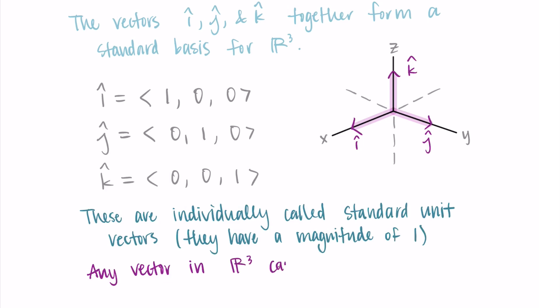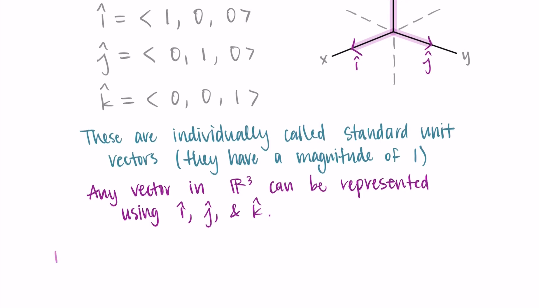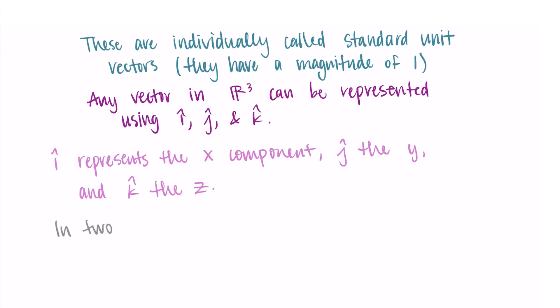And just to summarize, the purpose here is that any vector in R3 can be represented using these three vectors i hat, j hat, and k hat. So i represents the x component, j represents the y, and k represents the z. So these three together will give us the x, y, and z components for any vector in three dimensions. As a note, if we are just working in two dimensions, we only need to use i hat and j hat. So i hat and j hat actually make a standard basis for R2. Just a comment.